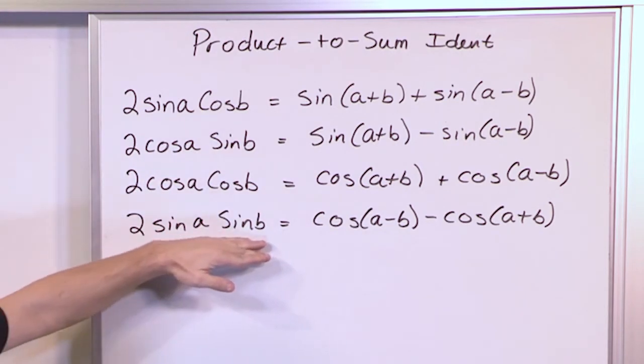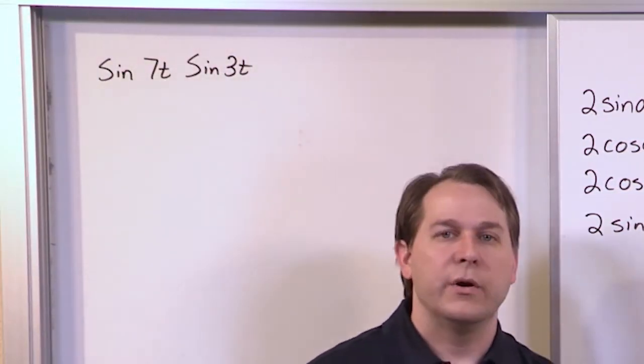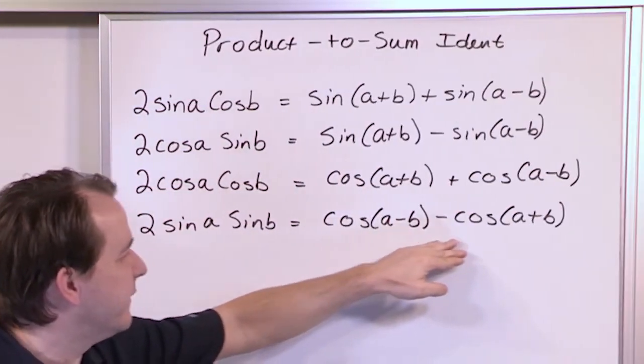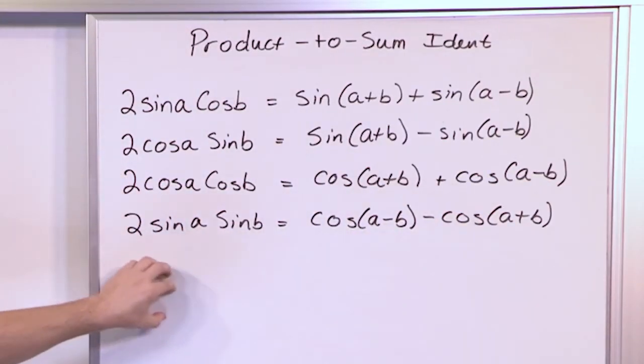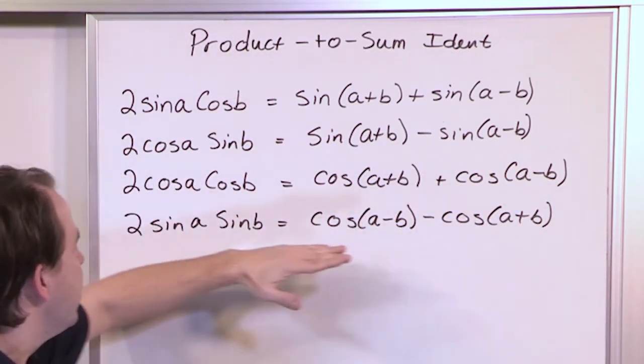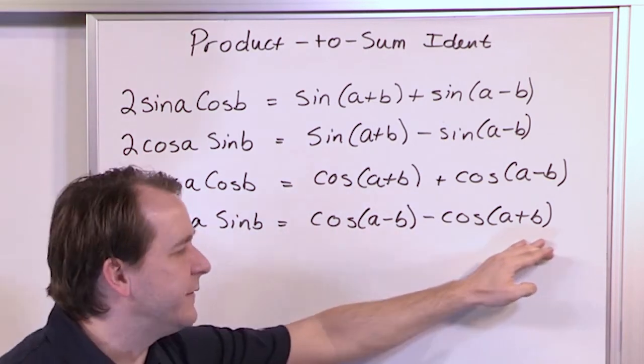However, there's a difference here. We have a 2 in front over here. In our problem, we don't have a 2. So a lot of students are like, well, how do I handle that? Well, you handle it just by using the rules of algebra. If this is equal to this, if I divide this side by 2 and bring it over here and make it a 1 half in front of all this stuff, then sine A times sine B is going to be 1 half of these guys.